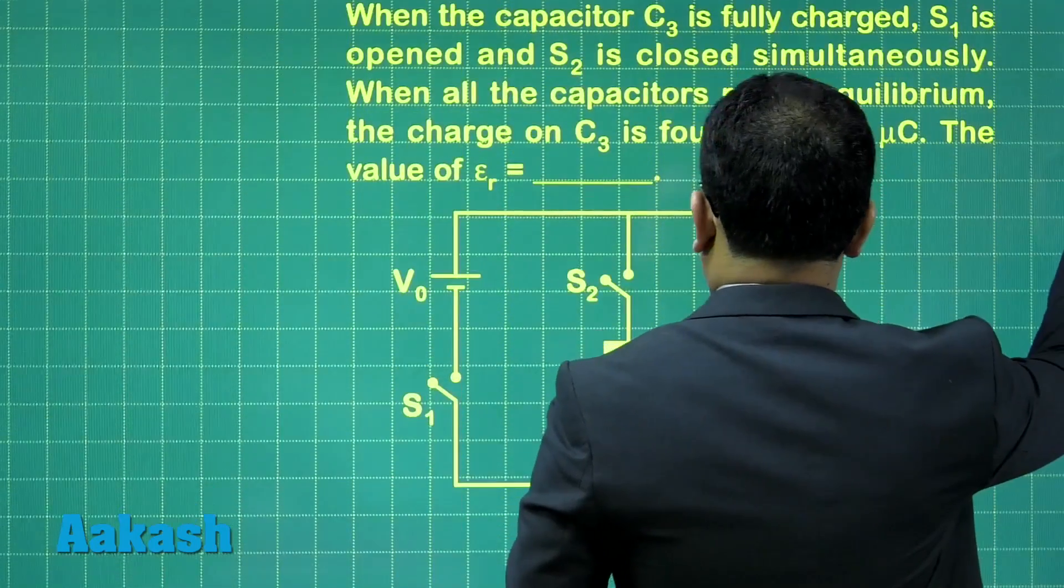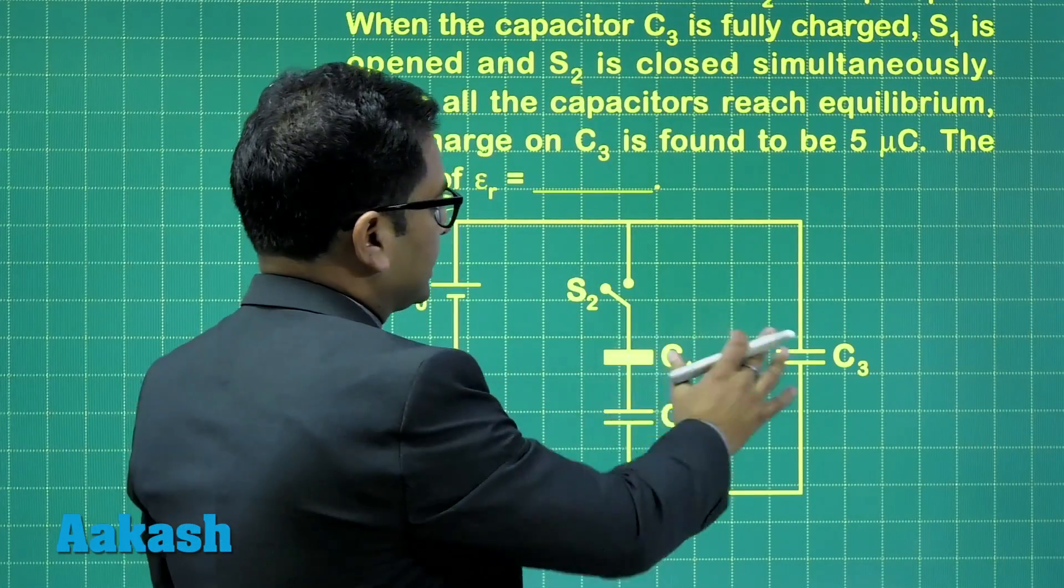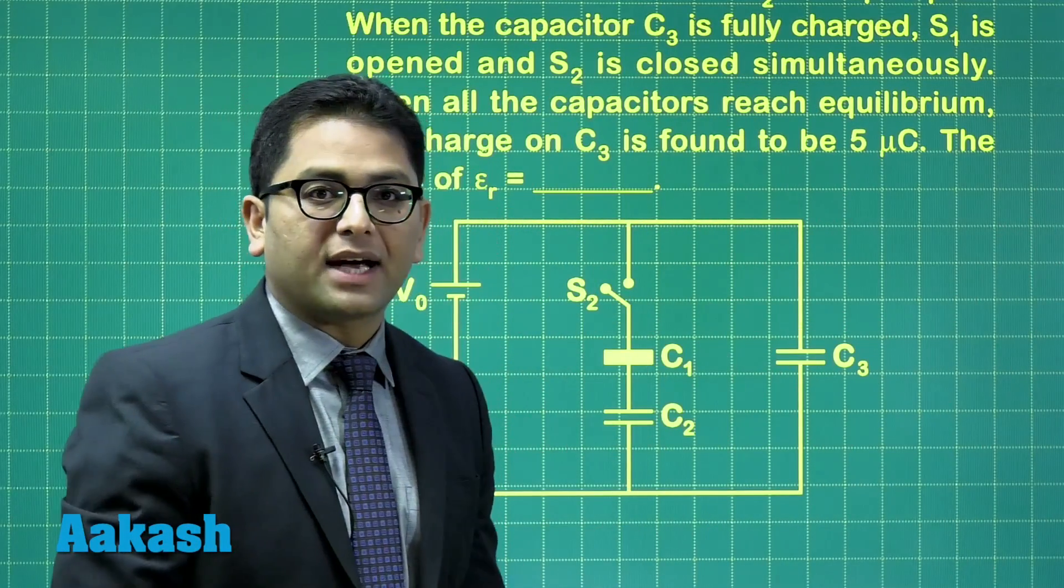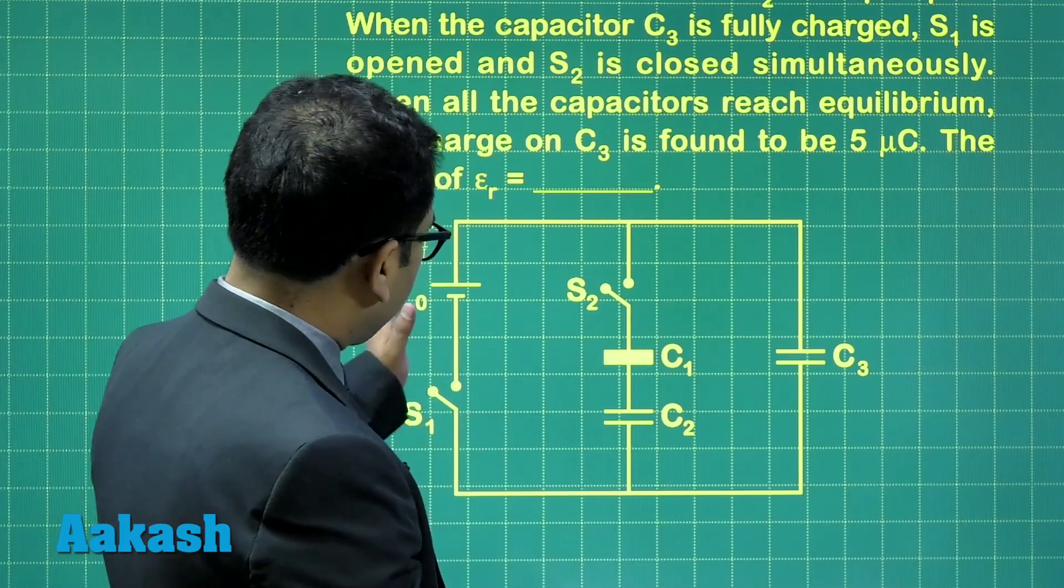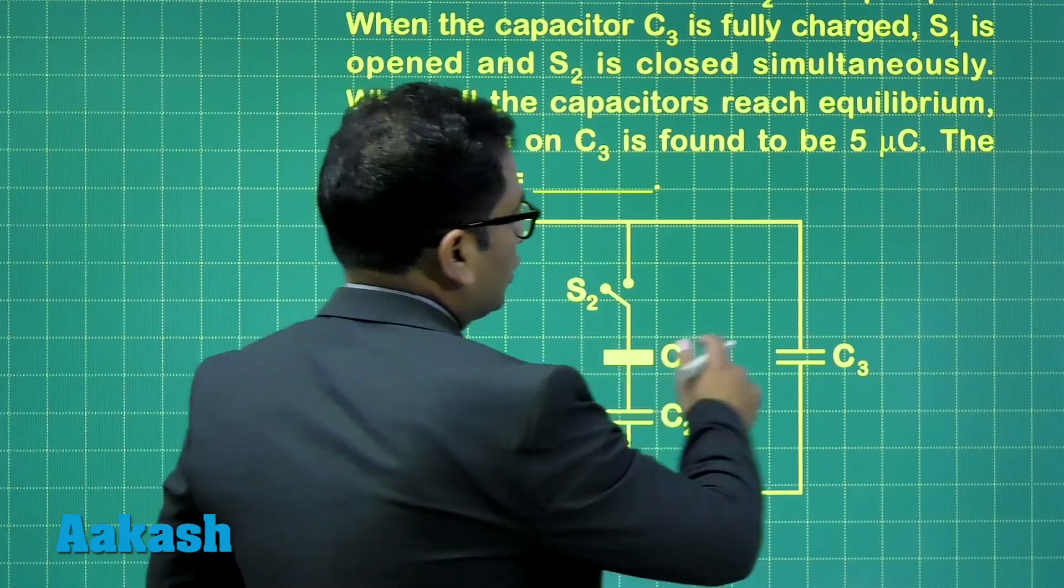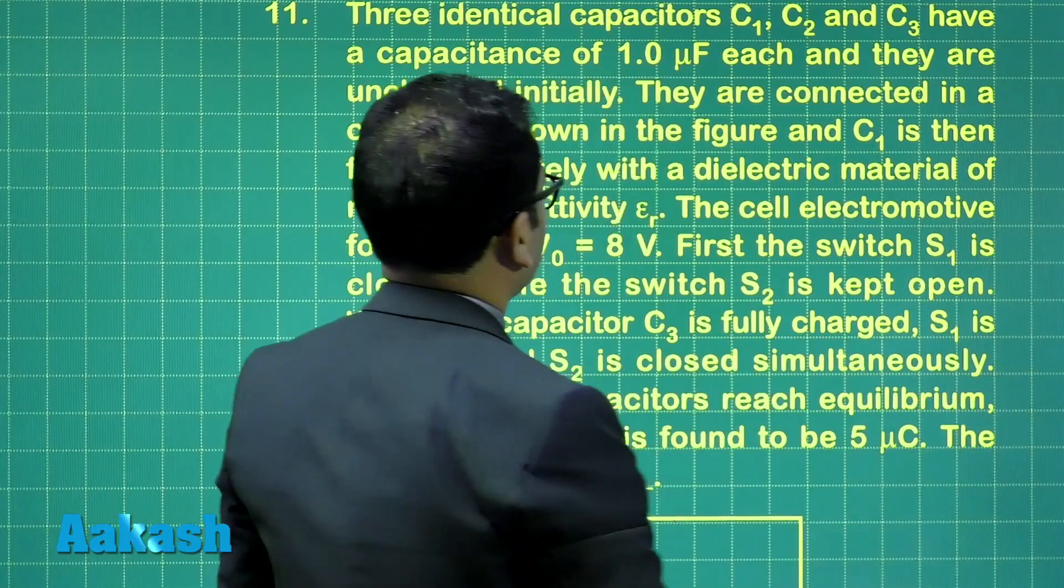So let me show the figure. So this is C1, C2, C3, all of 1 microfarad. But the battery is there, and you would see that there is a certain change which has been done.